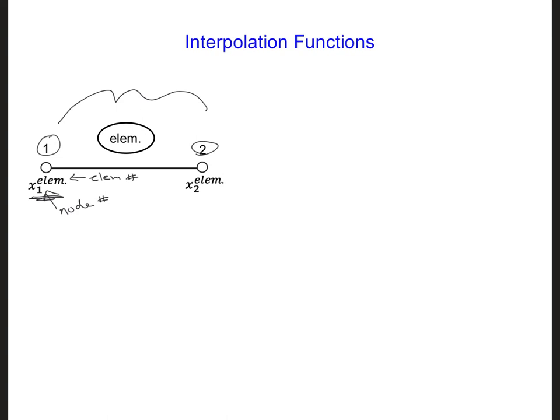Well, since we're solving for the ez values at the two nodes, we can interpolate the values of ez between the two nodes using an interpolation function or a basis function. Since we have two nodes, we will have two interpolation functions, one for each node of the element.